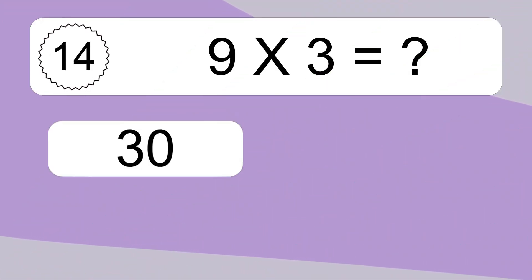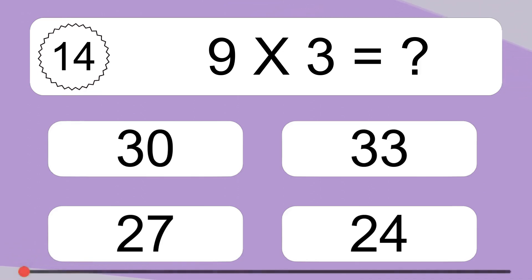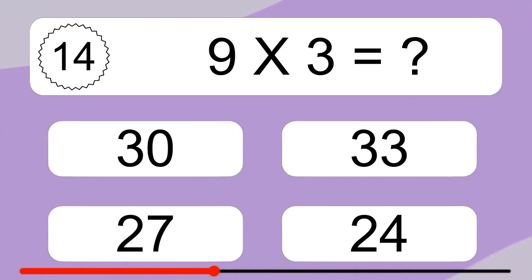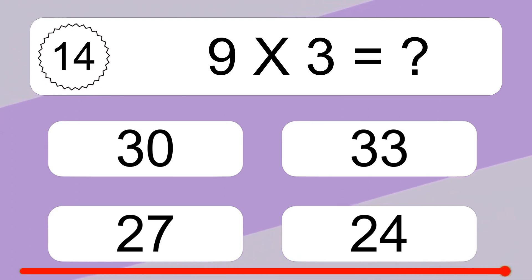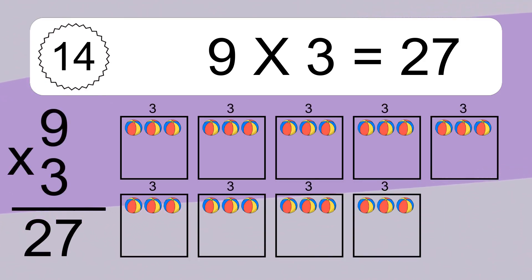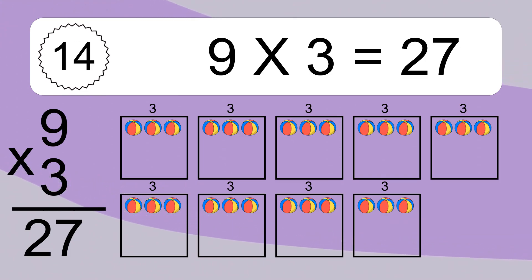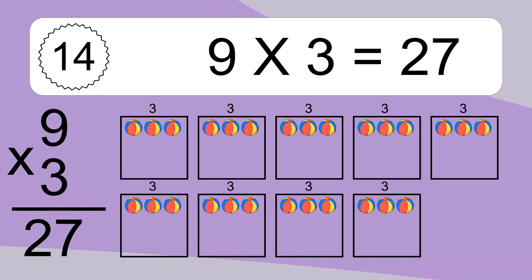Nine times three equals twenty-seven. We have nine boxes, and each box has three colorful balls inside. If you count all the balls in all the boxes together, you will have nine times three balls. This equals twenty-seven balls.